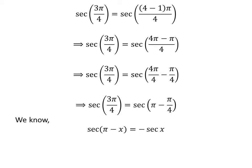We know the famous trigonometry identity: secant of (π minus x) is equal to minus secant of x. The proof of this identity has been explained in the video appearing in the upper right corner, and the link is also given in the description. Applying this identity gives us secant of 3π/4 is equal to minus secant of π/4.